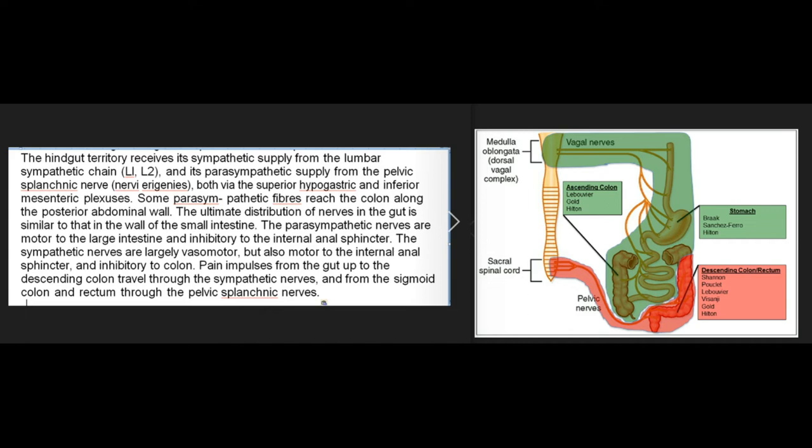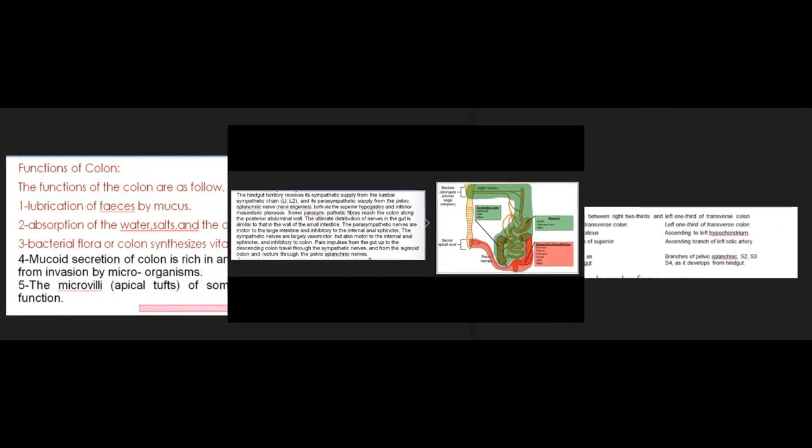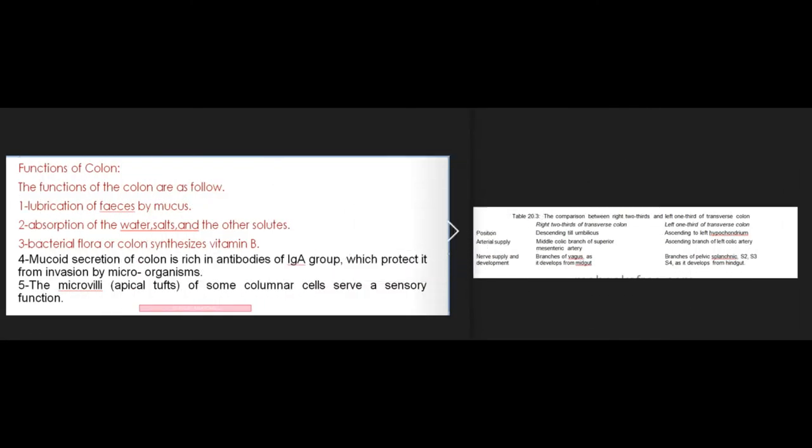The parasympathetic nerves are motor to the large intestine and inhibitory to the internal anal sphincter. The sympathetic nerves are largely vasomotor, but also motor to the internal anal sphincter and inhibitory to the colon. Pain impulses from the gut up to the descending colon travel through the sympathetic nerves; from the sigmoid colon and rectum through the pelvic splanchnic nerves. The functions of the colon include lubrication of feces by mucus, absorption of water, salts, and other solutes, synthesis of vitamin B by bacterial flora, mucoid secretion rich in IgA antibodies, and a sensory function served by microvilli apical tufts.